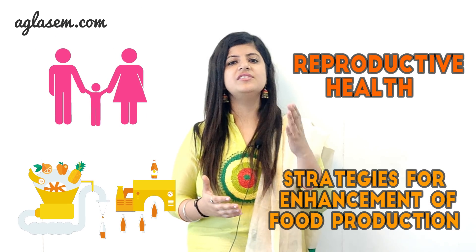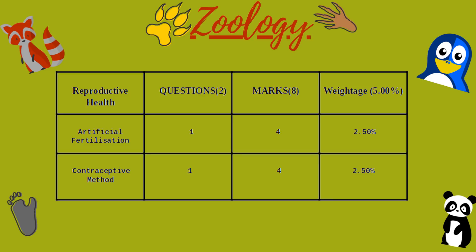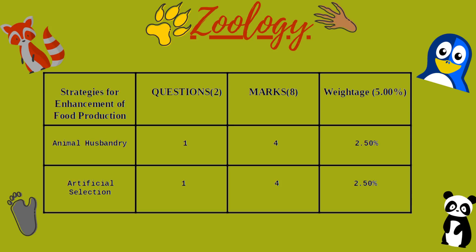Finally, the units with 8 marks weightage are Reproductive Health and Strategies for Enhancement of Food Production. Reproductive Health has 2 questions and marks weightage of 8, with topics: Artificial Fertilization (1 question, 4 marks) and Contraceptive Methods (1 question, 4 marks). Strategies for Enhancement of Food Production has 2 questions and marks weightage of 8, with topics: Animal Husbandry (1 question, 4 marks) and Artificial Selection (1 question, 4 marks).